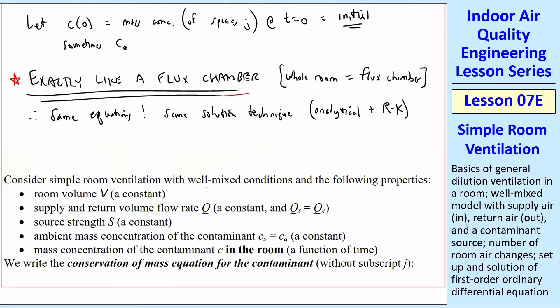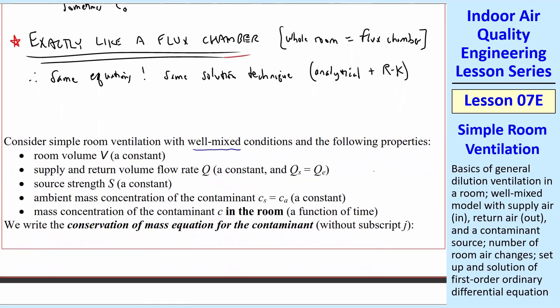This is a summary of what we're talking about here. Our simple room ventilation, well-mixed conditions, and these are the properties. Room volume is constant. Supply and return, volume flow rate are the same, because we're not adding any other volume flow rate. Source strength is also a constant. Ambient concentration of the contaminant is known. That's a constant. And then the mass concentration of the contaminant, C, in the room is a function of time.